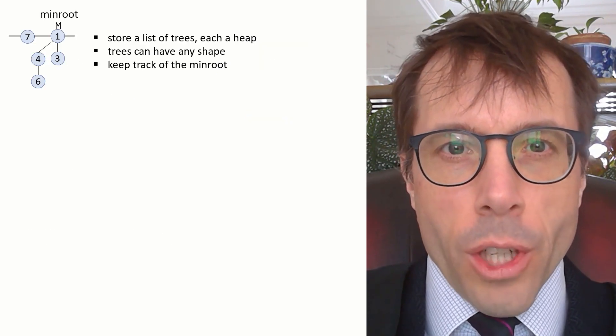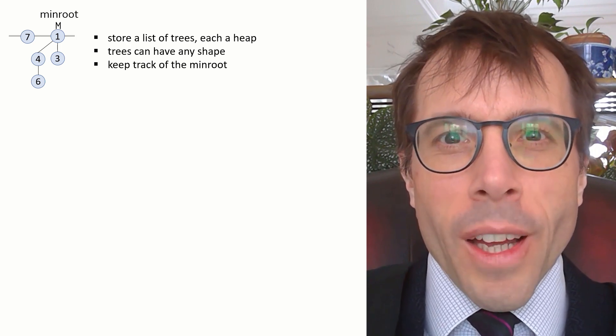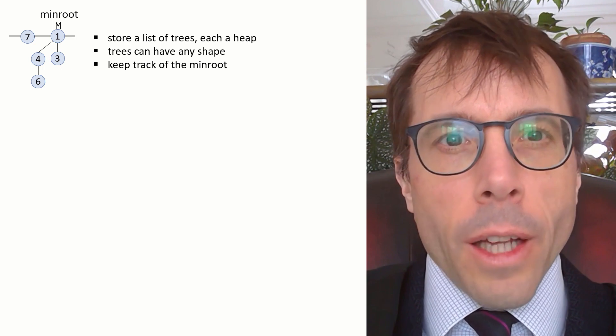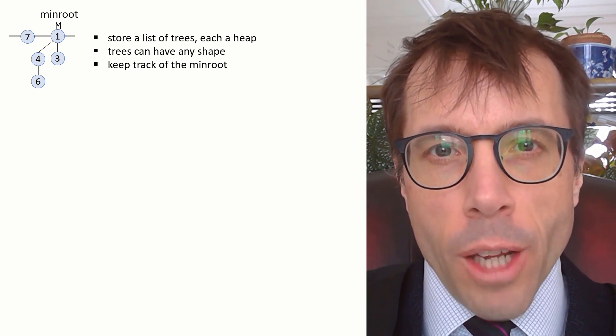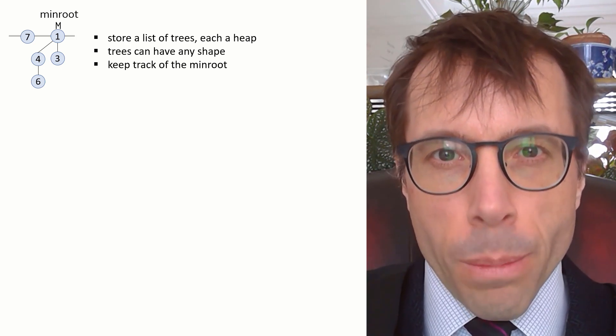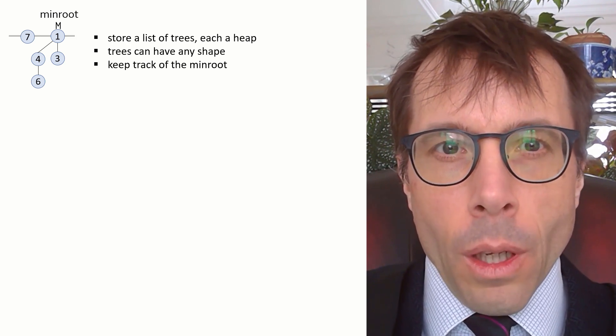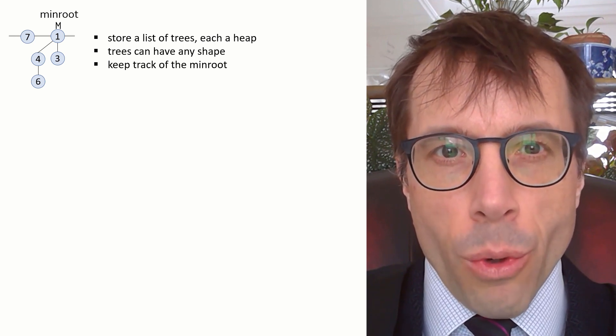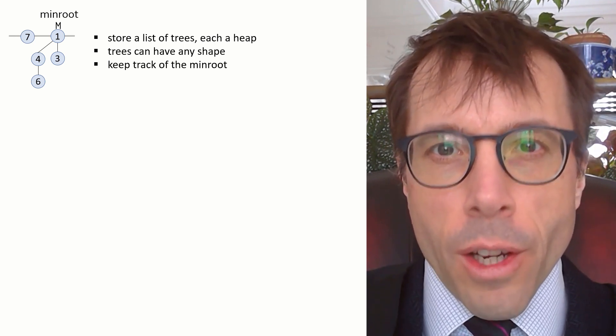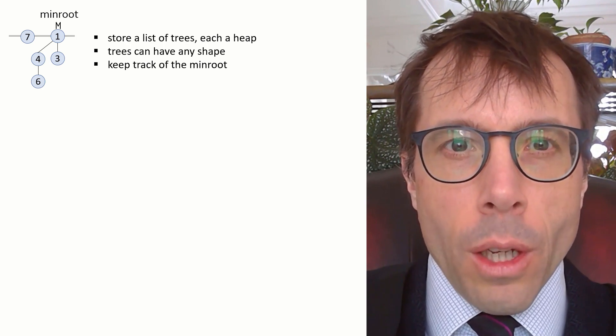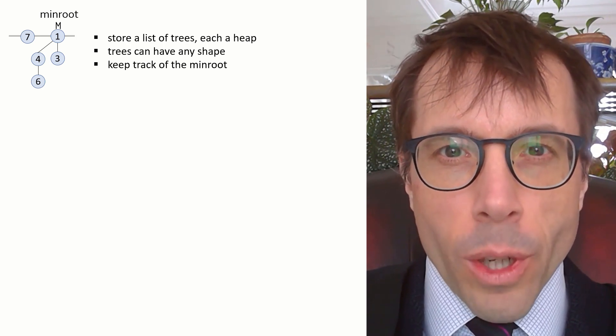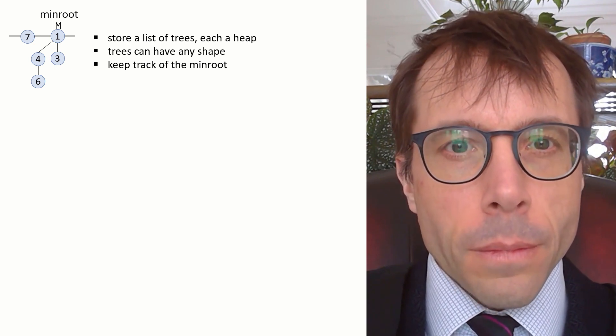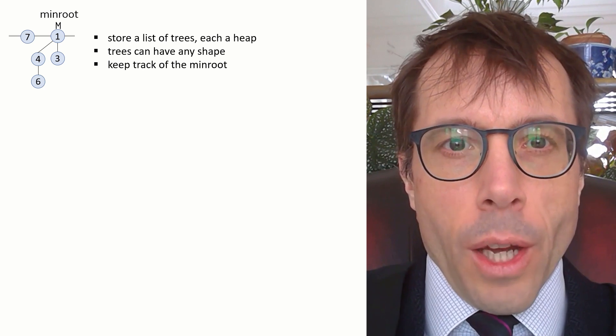This is what a Fibonacci heap looks like. It looks like the binomial heap. It's a list of trees, each one of them a heap. Unlike the binomial heap, the trees are allowed to have any shape at all. They're not restricted to being binomial trees. Also, we're going to keep a pointer to the tree with the smallest root, which must be the smallest item in the entire data structure, thanks to the heap property. We'll do this because we want fast access to it, and because the number of trees might be very large.